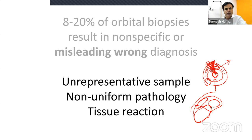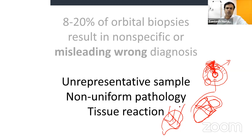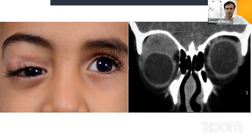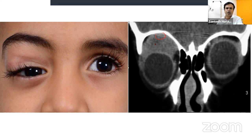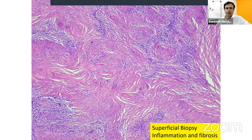Sample all three layers and send them separately to the pathologist. For example, a child with subacute proptosis: when the pathologist examined only the superficial biopsy, there was only inflammation and fibrosis. Had the biopsy been restricted to the superficial zone, the child would have been treated with steroids — a wrong treatment. The mid-zone and deep biopsy showed characteristics of embryonal rhabdomyosarcoma.